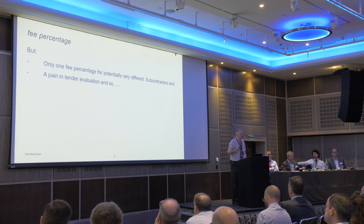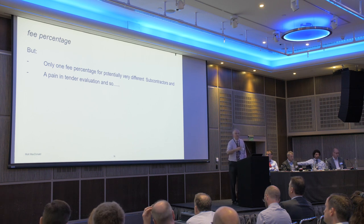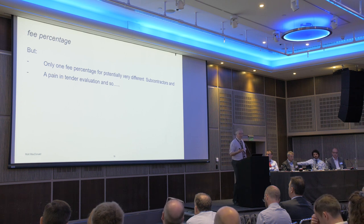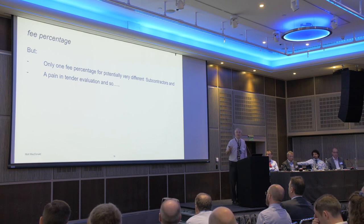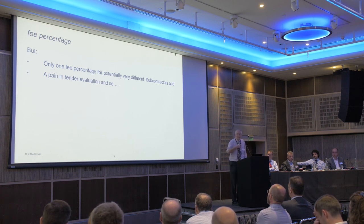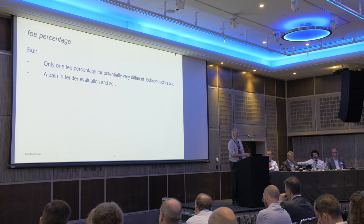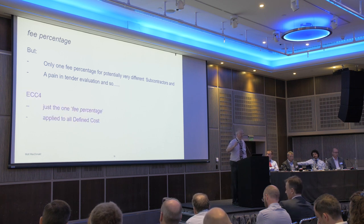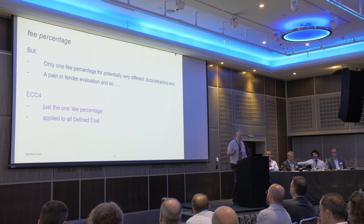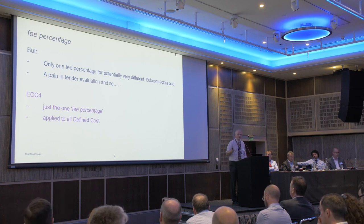Even in ECC3 there's only one subcontractor fee percentage, and the contractor might have liked different percentages for different subbies. Doing tender evaluation on this is a pain — you have to make a wild stab at how much will go through to subcontractors versus the main contractor, which is a leading reason why ECC4 made it easy: single fee percentage applied to all defined costs.